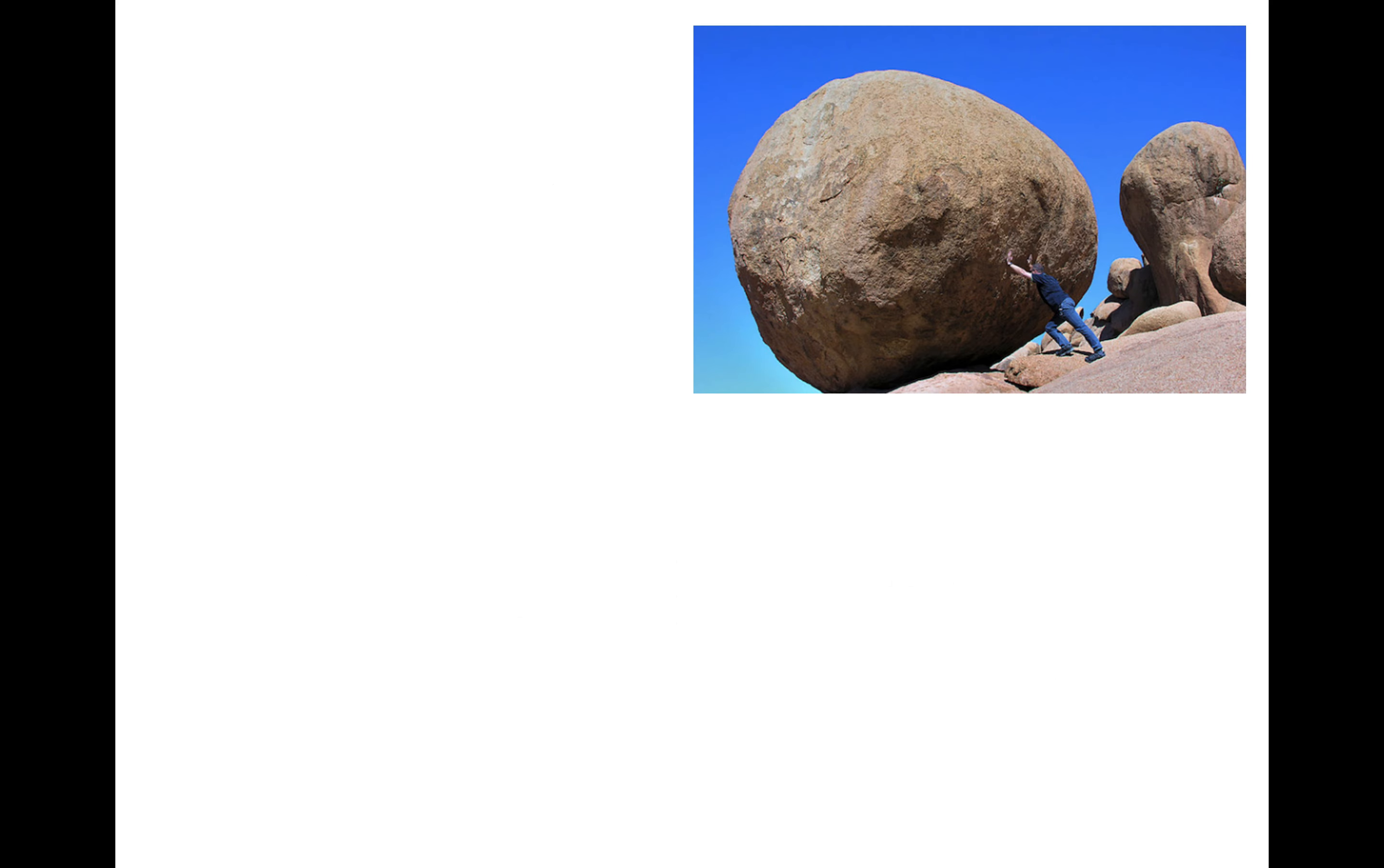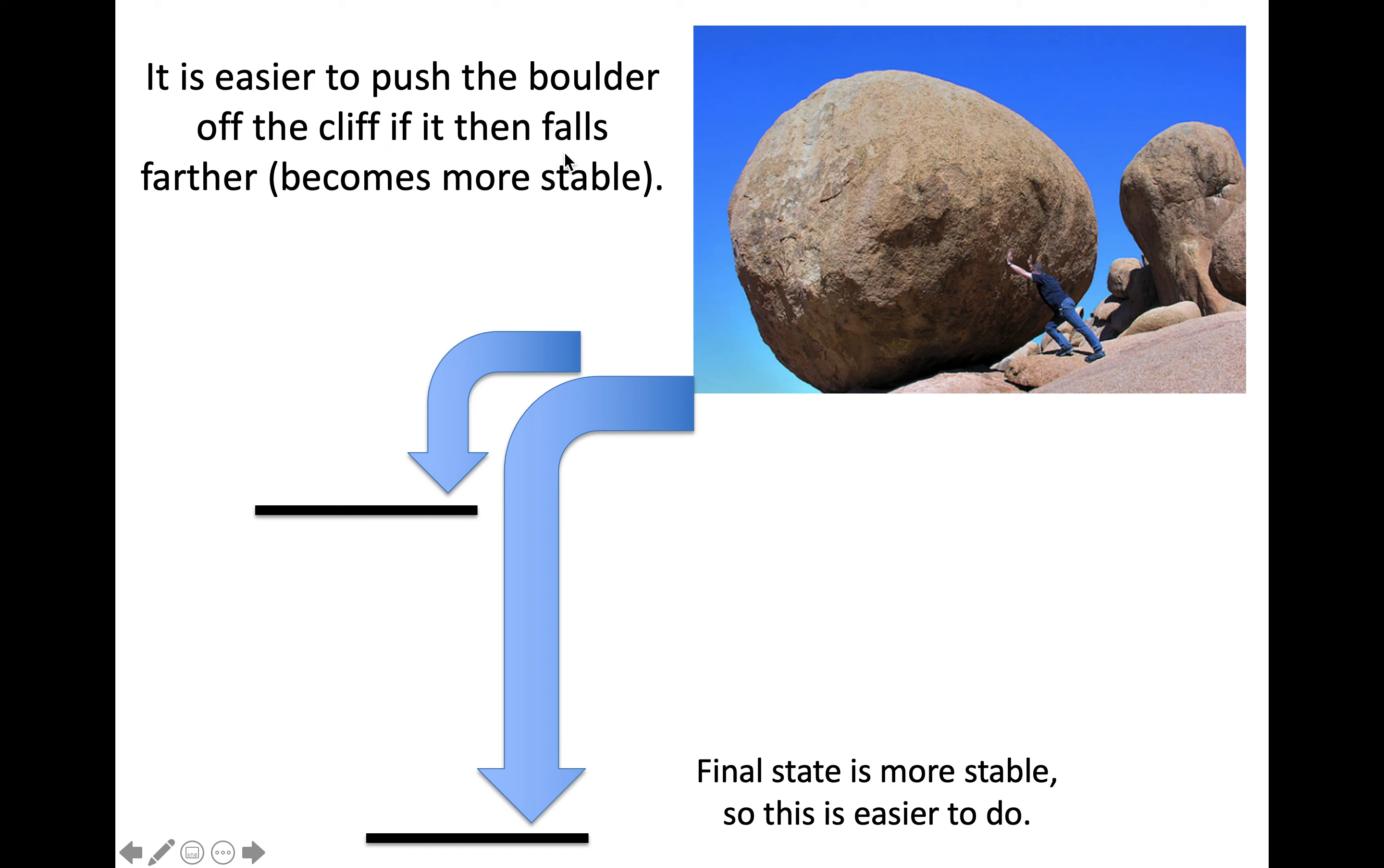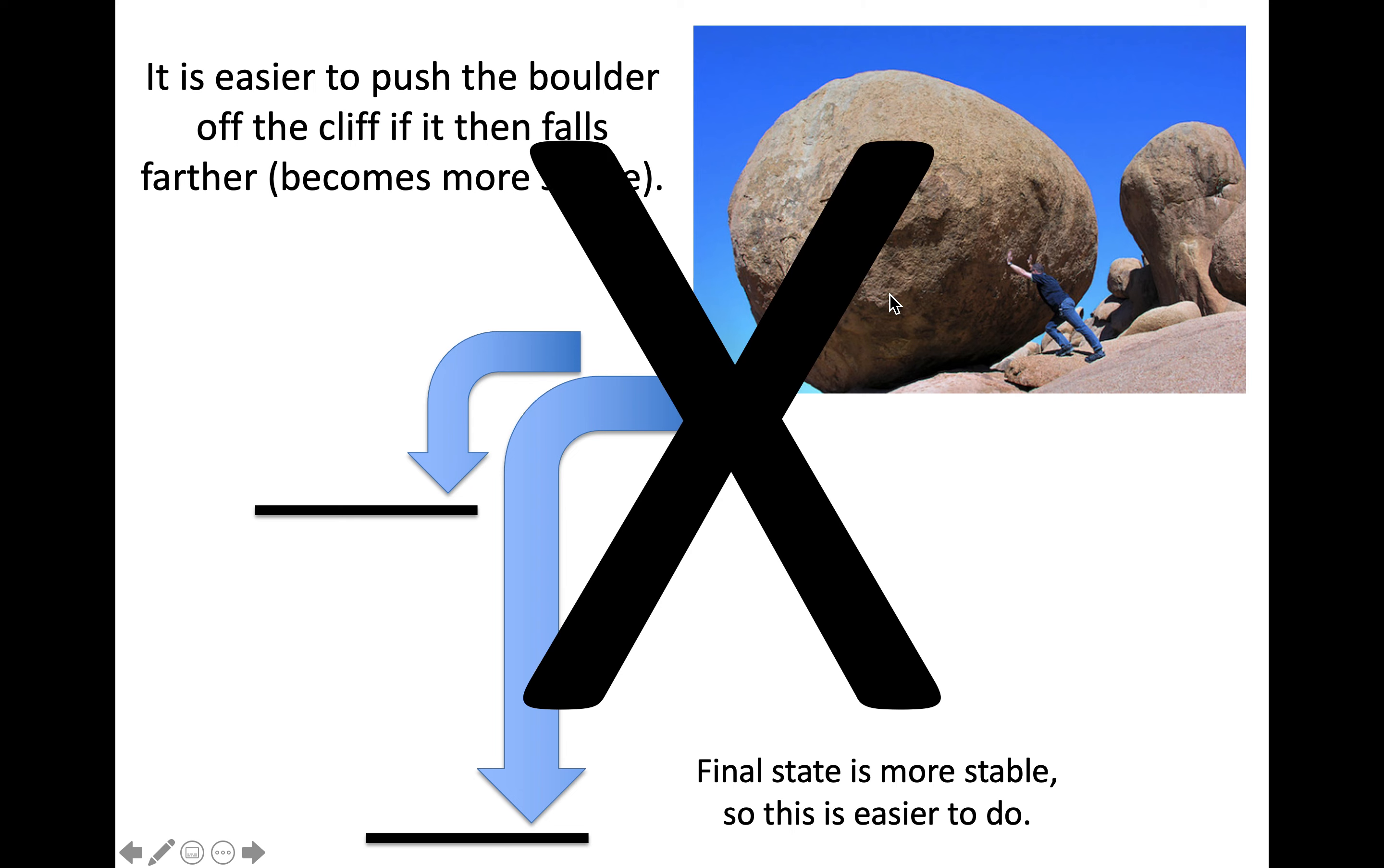I've tried to address this with a scenario. Imagine you're pushing a boulder off a cliff. It could fall down a little or a lot, with differences in potential energy. Is it easier to push the boulder off if it falls farther and becomes more stable? Does the final state make something easier to do if it leads to greater stability? I brought this scenario into class. Does the boulder know where it's going? No. It's about the force you need to push it in the first place. This is how I've addressed it. When pushing something that takes force, is it easier if the object falls to the floor versus getting caught halfway? I don't think so.